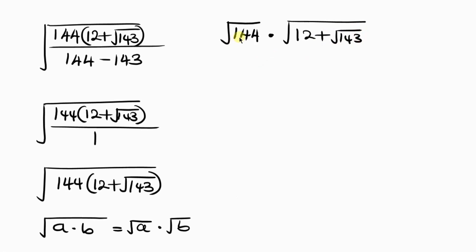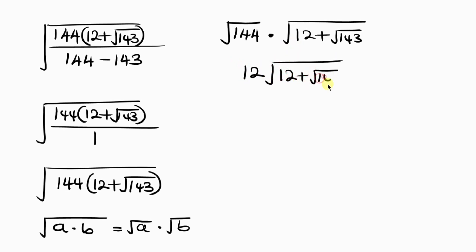We know that the square root of 144 is 12, so we have 12 times the square root of 12 plus the square root of 143.